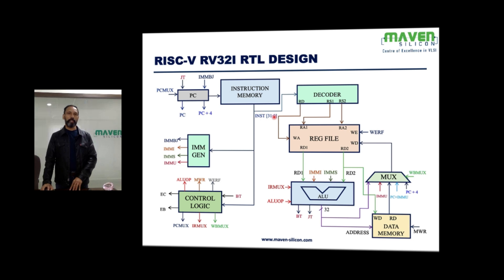There is a module called the immediate generator. The same 32-bit instruction will be available to the immediate generator and it's going to make use of the immediate values, generating different kinds: IMM_B, IMM_J, IMM, IMM_S, and IMM_U — different values based on the opcode.